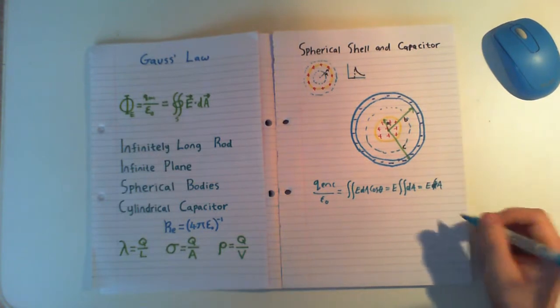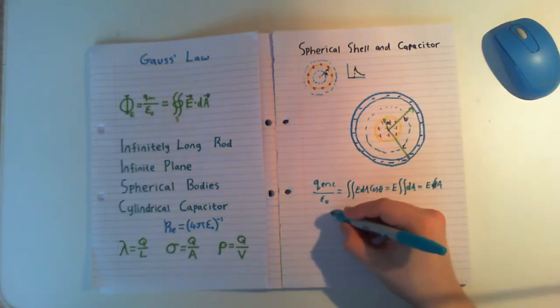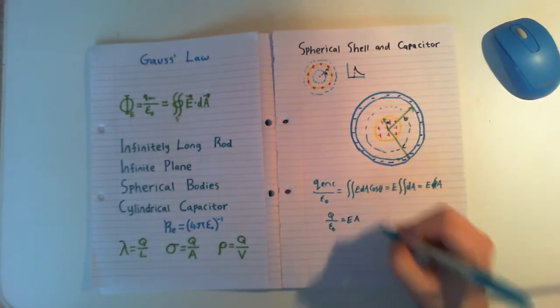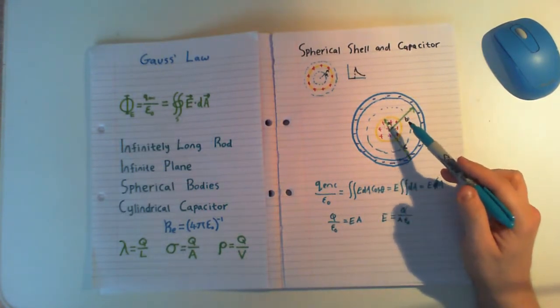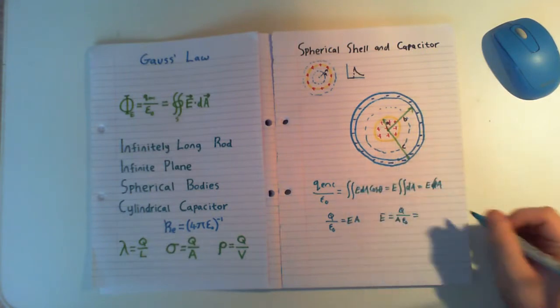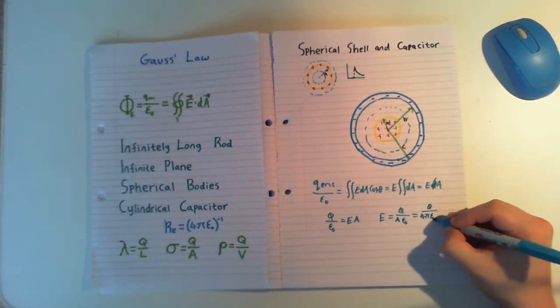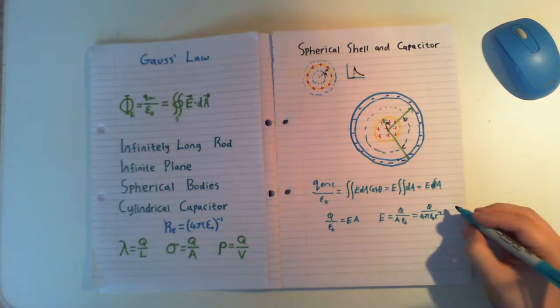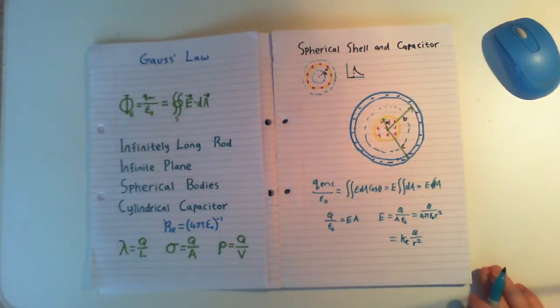And our dA and our cosine of theta is just going to be equal to one. And that means that we just get our E dA here. Nice and simple. Sorry, E A here. It's nice and simple that bit. Now, our Q enclosed is all enclosed. So that's just our charge. So we have our Q over epsilon 0 is equal to E A. So our E is equal to Q over A epsilon 0. And our surface here is just going to be our 4 pi R squared, as it is normally for a spherical surface. So Q over 4 pi epsilon 0 R squared. And we know that this is just going to be equal to K sub E Q over R squared.